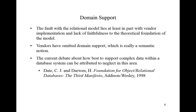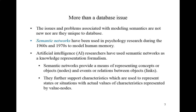The work by C.J. Date and Hugh Darwin provides interesting reading along this line. The issues we're talking about — the problems we're describing — are associated with modeling semantics, and these are not new, nor are they unique to database systems. Historically, research has investigated the idea of richer, fuller modeling. Semantic networks have been used in psychology research during the 1960s and 70s to model human memory, and in the field of artificial intelligence, researchers have used semantic networks as a knowledge representation formalism. Semantic networks provide a means of representing concepts or objects, and events or relations — these are nodes and links between these nodes.